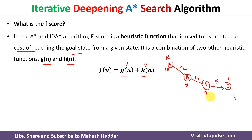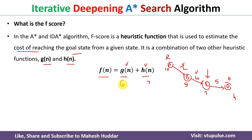Now, what is g(n) and h(n)? Let's assume that currently we are present at node C. If C is the current node, then h(n) = 7, which is simply the heuristic value of that node. And g(n) is the actual cost to reach the current node starting from the root node. The actual cost here is 2 + 4 = 6.